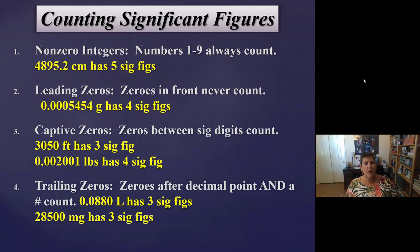And now the next last example, 28,500. Okay, those zeros are at the end, but is there a decimal point? No. So they are placeholders. So only the two, eight, and the five count, three sig figs. Now, can we get rid of those zeros and make it 285? No. If a car costs $28,500, you can't say, I'll give you $285 for it. That's not the same thing. Those zeros are important. They're placeholders. They're just not significant. So 28,500 has two placeholder zeros. Only the two, eight, and five are significant. All right, those are our four rules on sig figs.